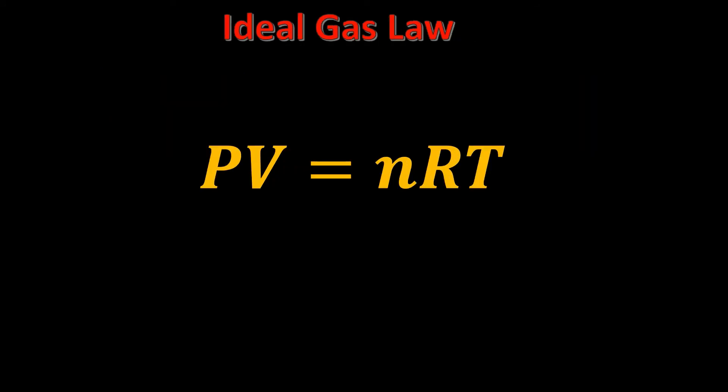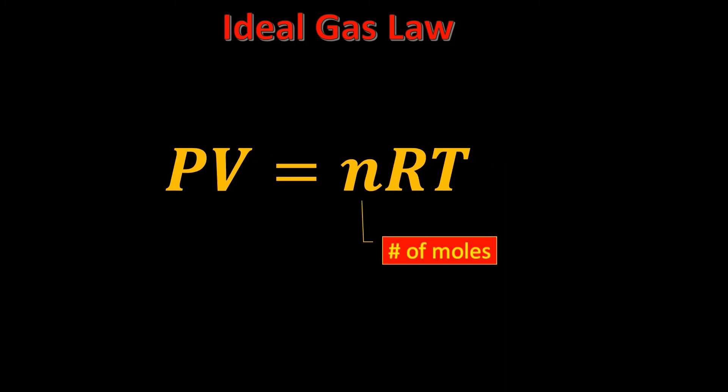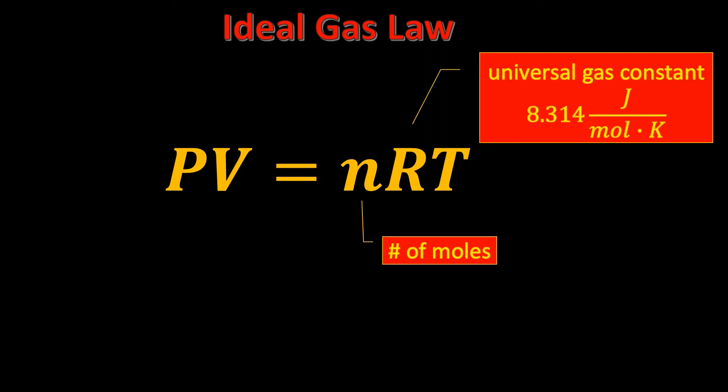These three laws are combined in the ideal gas law. You can relate pressure, volume, and temperature together in a closed system with PV = nRT — also known as PIVNRT. P is pressure, V is volume, T is temperature in Kelvin, n is the number of moles, and R is the universal gas constant equal to 8.314 joules per mole per Kelvin.